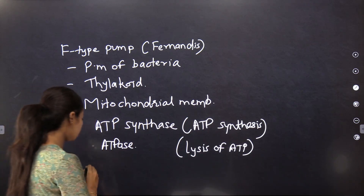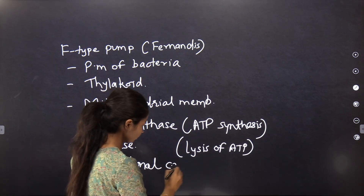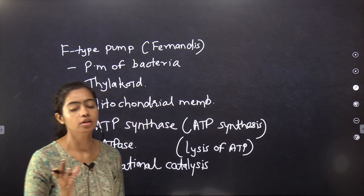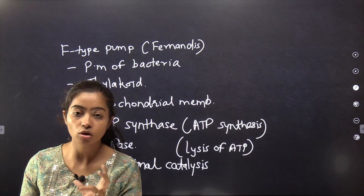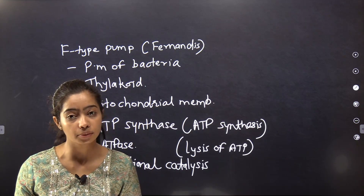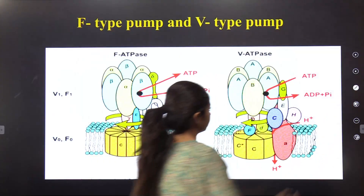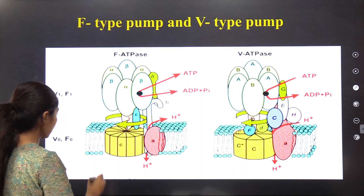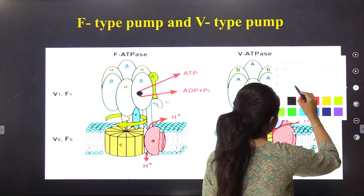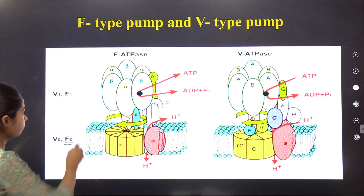This F-type pump works on the mechanism of rotational catalysis. The F0 portion of the F-type pump rotates in such a direction that ATP synthesis and ATPase activity occur. In the plasma membrane, the F0 subunit is embedded and the F1 portion is outside, towards the cytosolic side.